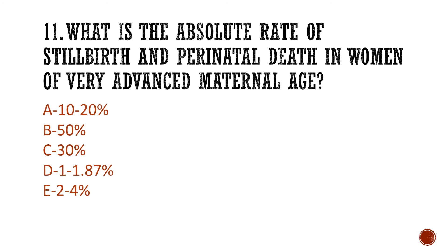We're now halfway through the presentation — if you've stuck with it so far, please give the video a thumbs up and let me know in the comments how you've been finding these questions. Question 11: What is the absolute rate of stillbirth and perinatal death in women of very advanced maternal age? Options: A) 10–20%, B) 50%, C) 30%, D) 1–1.87%, E) 2–4%. The answer is 1–1.87%.